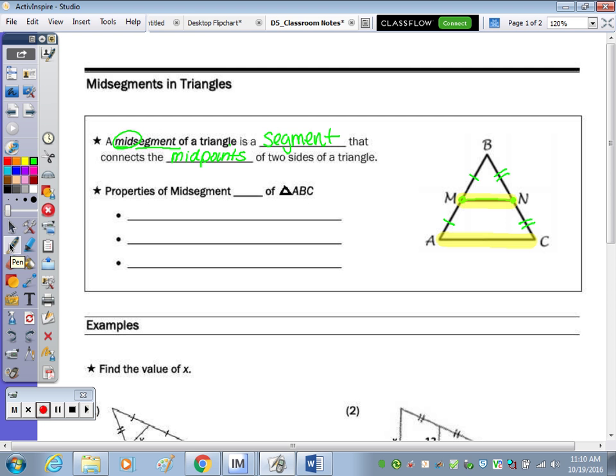So the next star says the properties of our midsegment, so our midsegment in this picture is MN. The properties are that it's half of AC, half of the side that's opposite. So AC was, let's say, 8, half of 8, MN would be 4.